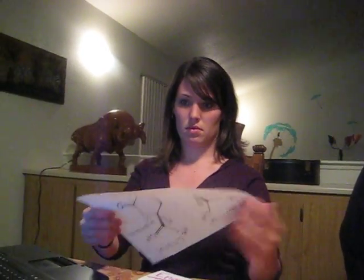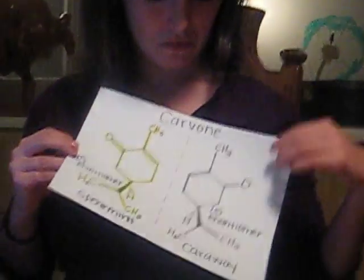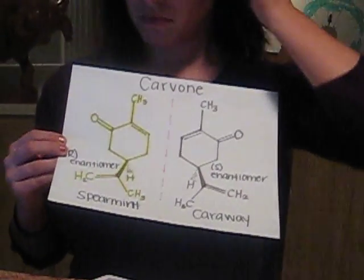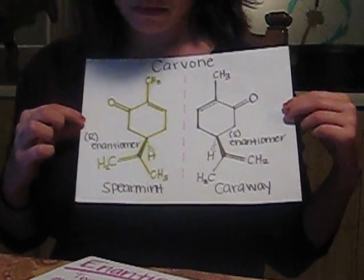Oh, I get it, but why does my gum taste like rye bread? Because the molecule Carvone has two enantiomers: the R-enantiomer and the S-enantiomer.